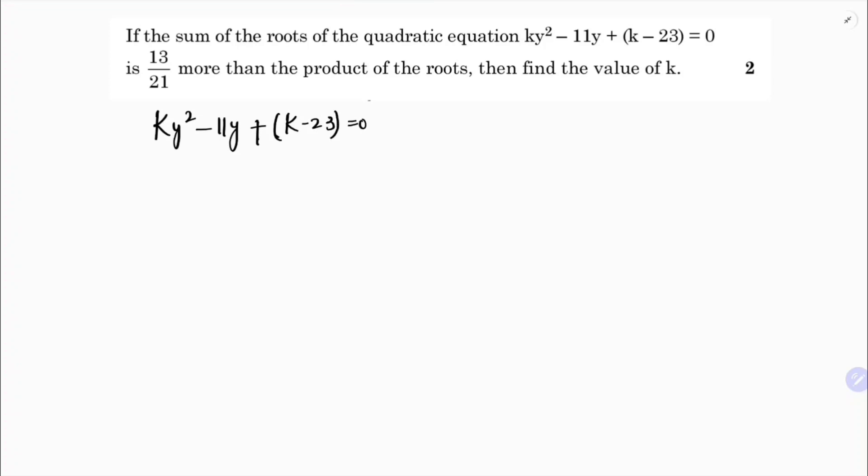If sum of the roots of the quadratic equation is 13/21 more than the product of the roots, so here very clearly it is given that sum of the zeros is 13/21 more than product. So product of the zeros plus 13/21.